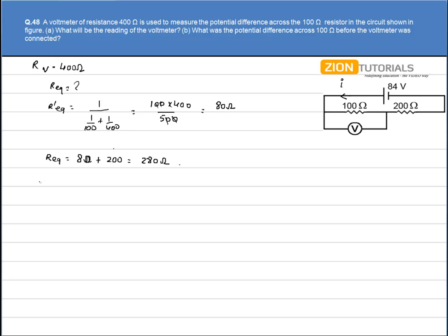Current can be easily calculated by Ohm's law, that is V equals IR. I have potential as 84 volts. Current is what I have to calculate and resistance is 280 ohms. So current comes out to be 0.3 amperes.